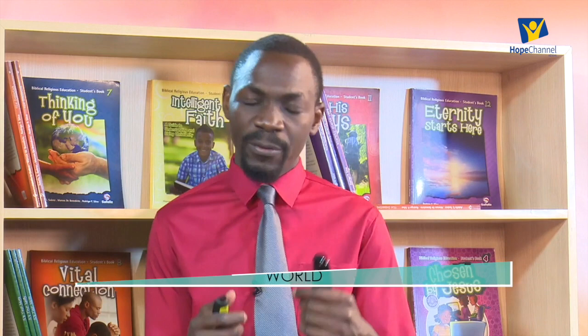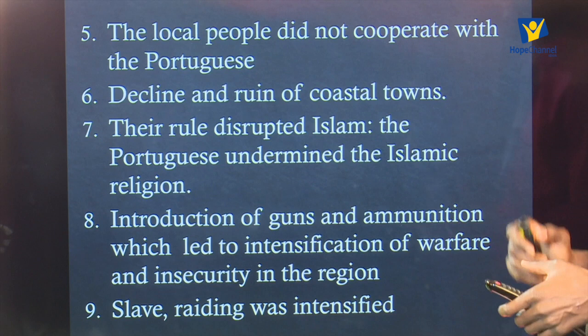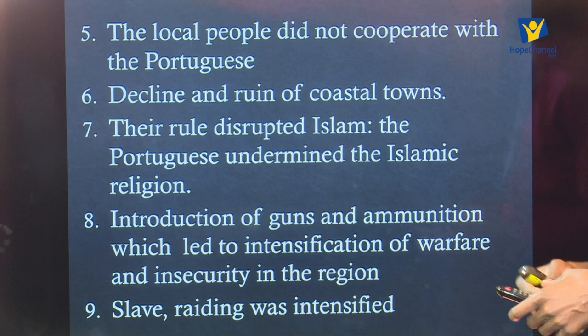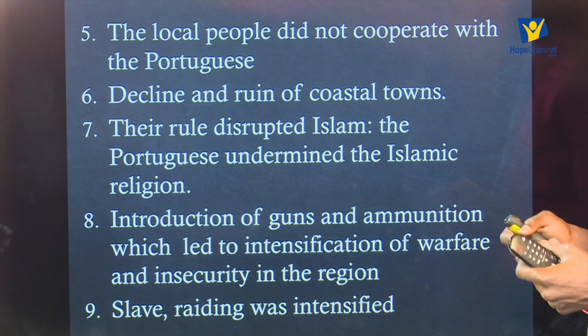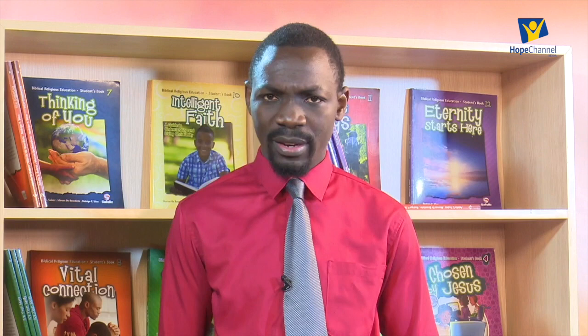Number five, the local people did not cooperate with the Portuguese. It is obvious that if the rule is going to be ruthless and harsh, and if they are going to apply tactics like the scorched earth policy to kill people and destroy property, then people will outrightly rebel. As a result, the local people did not cooperate, did not gain in any way, and the Portuguese ended up losing.